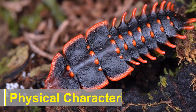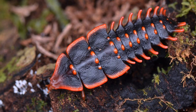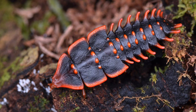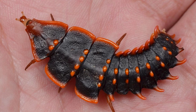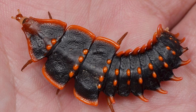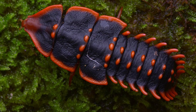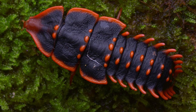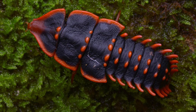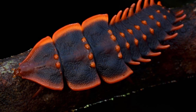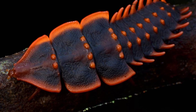Trilobite beetles are relatively small insects, typically measuring around 1 to 2 centimeters in length. Their most distinctive feature is their unique body shape, which resembles the ancient trilobites. Their body is flattened and elongated, with a broad thorax and a tapered abdomen, resembling the three-lobed body plan of trilobites. This striking resemblance is believed to serve as a form of mimicry, acting as a defense mechanism against potential predators.